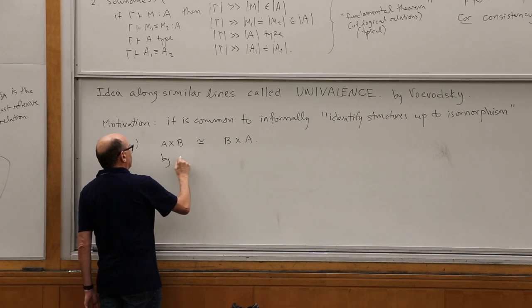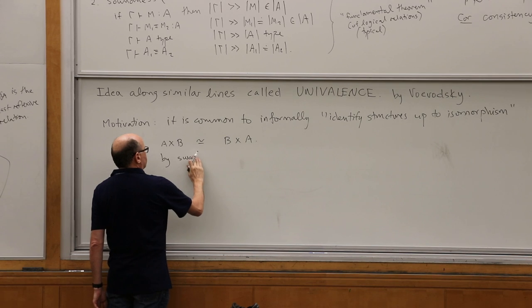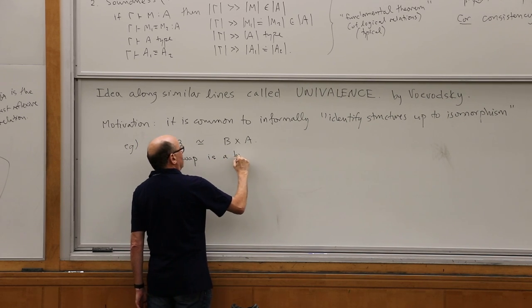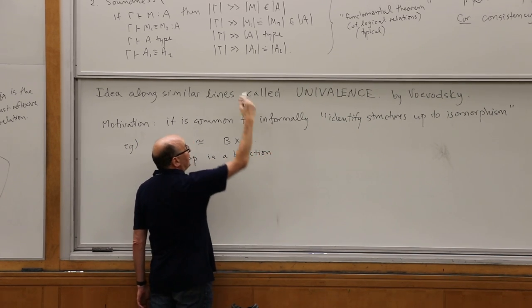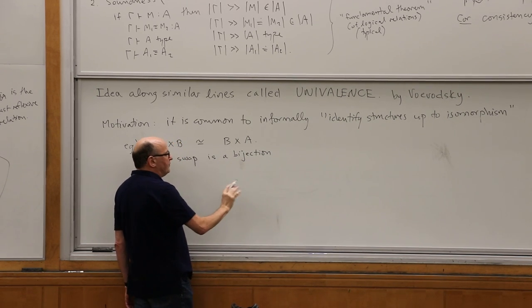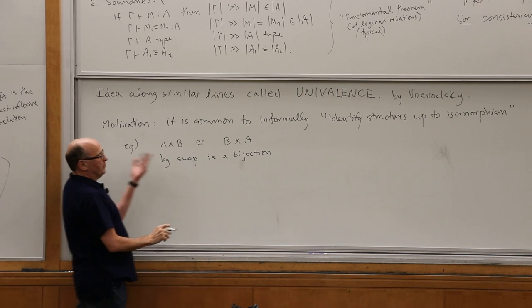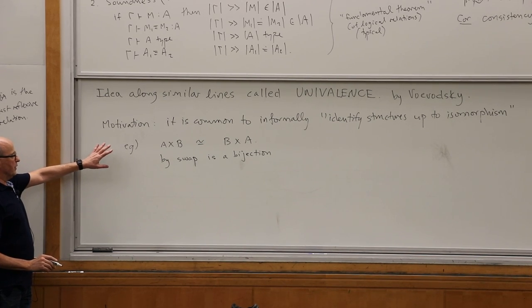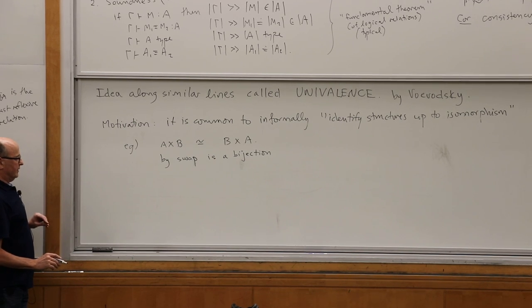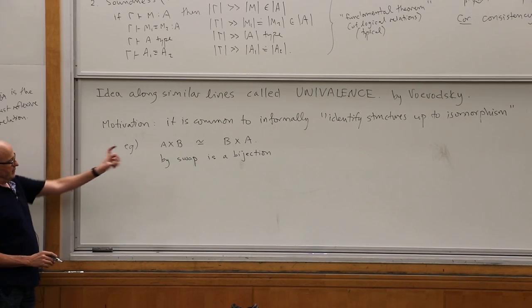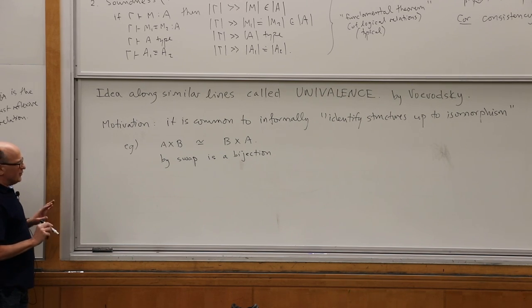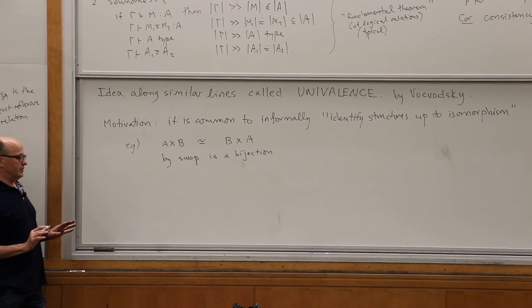There's the function swap, which swaps the components of a pair and is its own inverse — so it's a bijection. Assuming we have the eta principles, it's a bijection on the nose with definitional equivalence. At the very least, we can expect that the round trip — doing swap composed with swap — is equal as an inhabitant in the identity type to the identity. So it's going to be a bijection. I'm going to send the pair AB to BA and back.